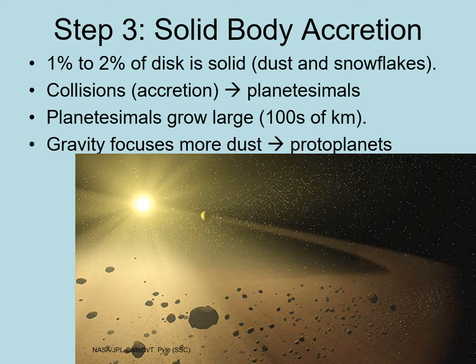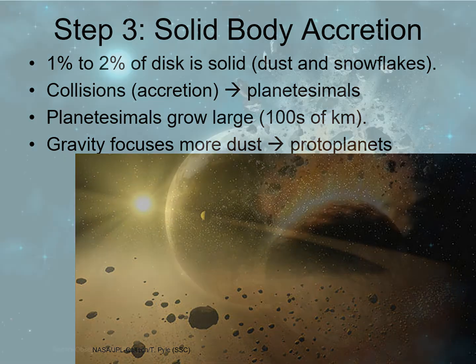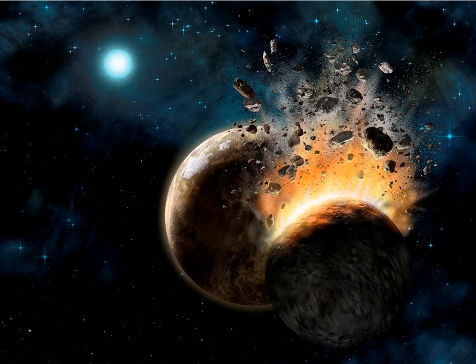When enough planetesimals accrete to form a body 1,000 kilometers across, we call that a protoplanet. By this point, its gravity is large enough that it stirs up the surrounding planetesimals into relatively high eccentricity orbits, so that when they collide with each other, they're moving very fast. This causes them to shatter rather than accreting to form competing protoplanets.